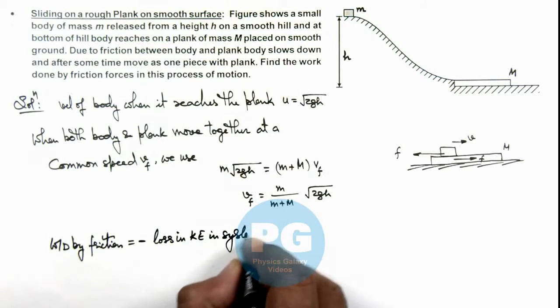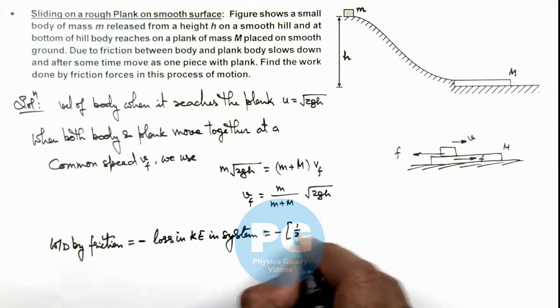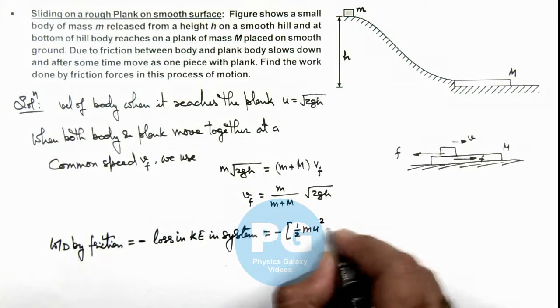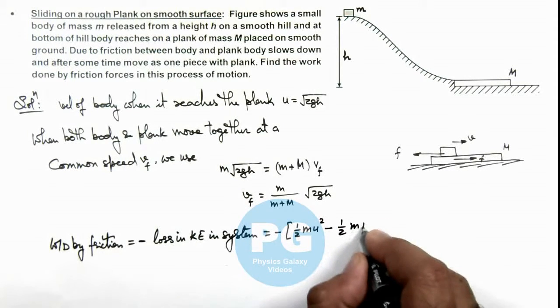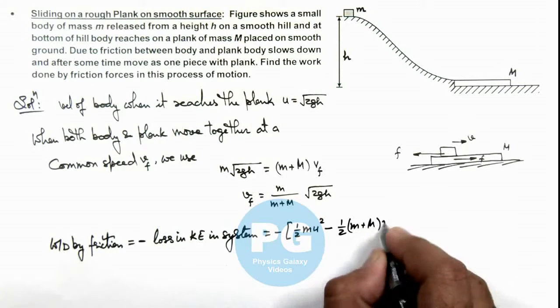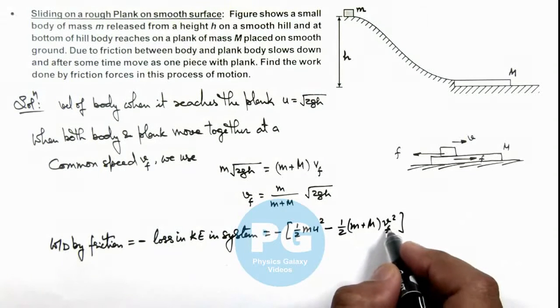So if we calculate it initial kinetic energy of the system was half m u square. Finally half m plus capital M, multiplied by v f square as finally the two are moving as a single body with the speed v f.